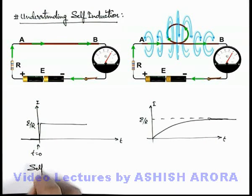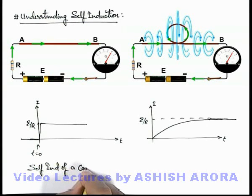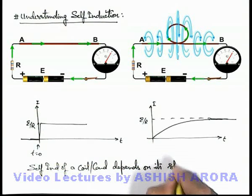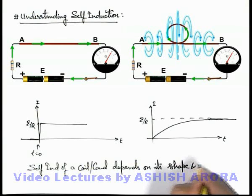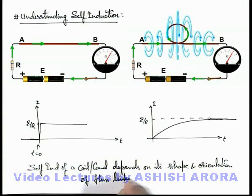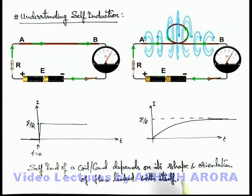So we can say that self-induction of a coil or a conductor depends on its shape and orientation of flux linked with itself.